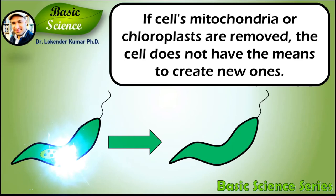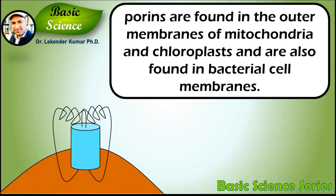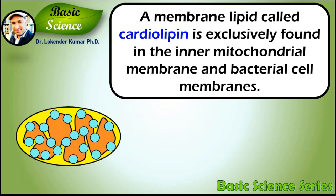Transport proteins called porins are found in the outer membranes of mitochondria and chloroplasts, and these are also found in bacterial cell membranes. A membrane lipid called cardiolipin is exclusively found in the inner mitochondrial membrane and bacterial cell membranes.